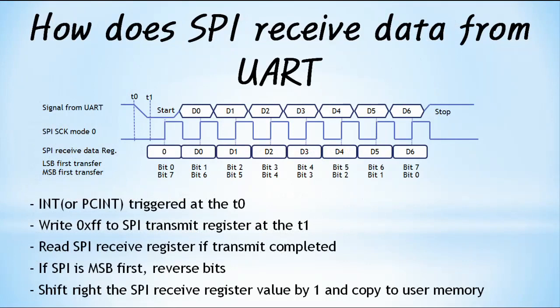Transferring characters from SPI to UART was very simple. However, it is a bit complicated to receive characters sent by the UART to the SPI. As shown in the figure, when the SPI MISO pin is idle and the UART starts transmitting, a signal is input to SPI MISO. The SPI uses the highest priority INT or PCINT available to detect the start bit. When initializing the peripheral, initialize the INT to detect the start bit with a falling edge trigger. When the start bit is input to MISO at T0, jump to the INT/PCINT service routine to evacuate the necessary registers to the stack.